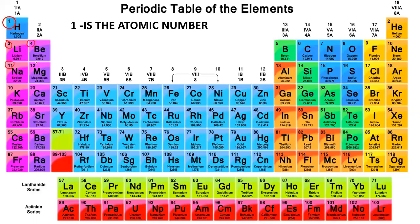We need to know the atomic number because we will use it to compute the number of protons, neutrons, and electrons. The other important number is at the bottom — for hydrogen, that is 1.008. This is the atomic mass of the element. So the atomic mass of hydrogen is 1.008.